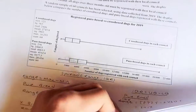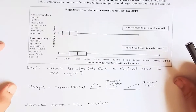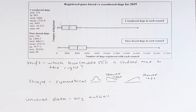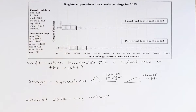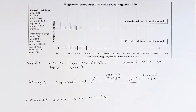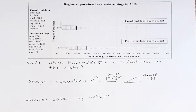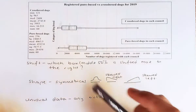Now we are going to analyse three more things: the shift, the shape, and some unusual data. For shift, you look at the box — which box is more shifted to the right? In our case, the purebred dog box is shifted more to the right, also called the middle 50%. We can conclude that purebred dogs in each council have a bigger registration than crossbreed dogs.